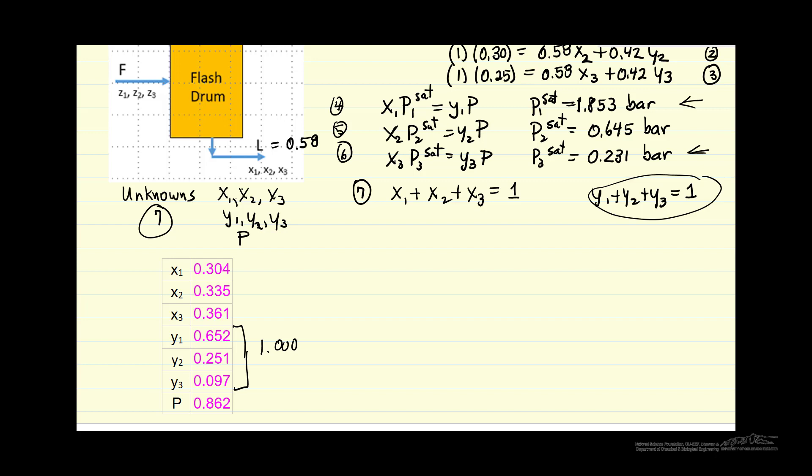And then we can look at the enrichments like the Y1 over X1, which is equal to 2.1. As we would expect, more volatile component enriched in the vapor phase. Let's look at K3, the least volatile component, so Y3 over X3. We substitute the numbers in for that, 0.27.